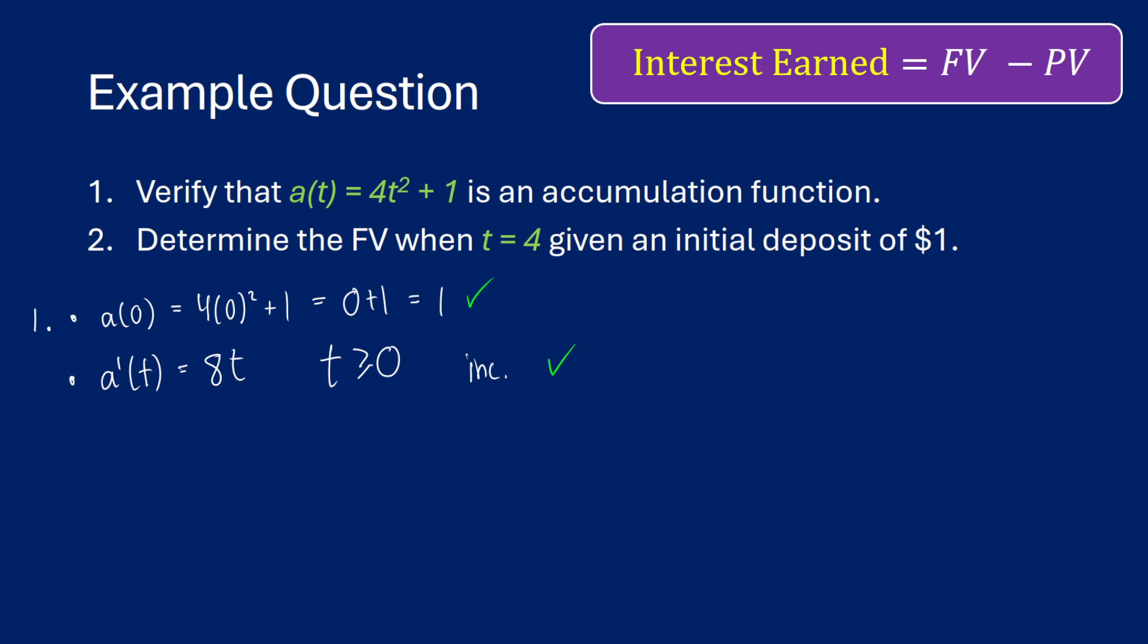Now, the third one says that we need to verify that it's differentiable and continuous. Well, it's a polynomial. So we just have 4t² + 1. Therefore, it's going to be continuous and differentiable just based off calculus knowledge.